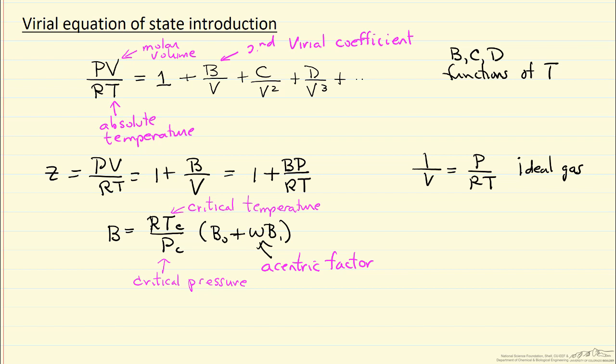The other terms, so B1 is - again, this results from correlations - the reduced temperature over 4.2.